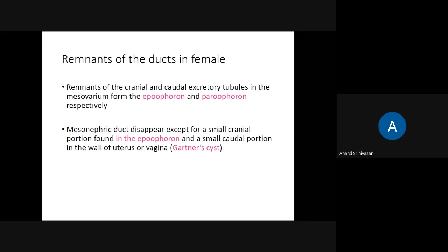Now let's see the remnants. Just as we saw remnants of the paramesonephric duct in males, there are remnants of the mesonephric duct in females. The remnants of the cranial and caudal excretory tubules form the epoophoron and paroophoron. The mesonephric duct disappears except for a small cranial portion and a small caudal portion.